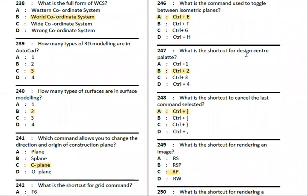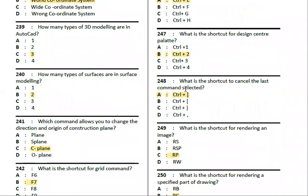Ctrl+E. To open the Design Center palette, use Ctrl+2. To cancel the last command, use Ctrl+Z. The closing bracket shortcut is also noted here.